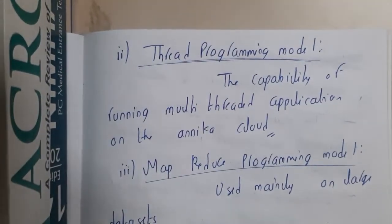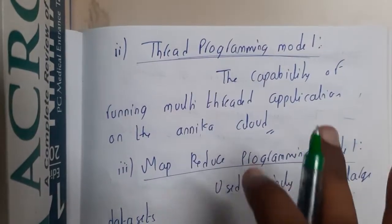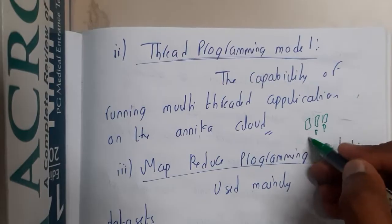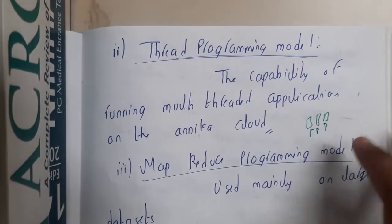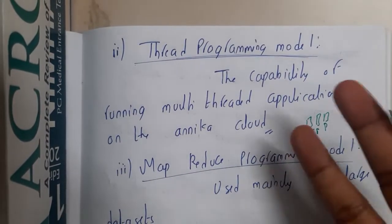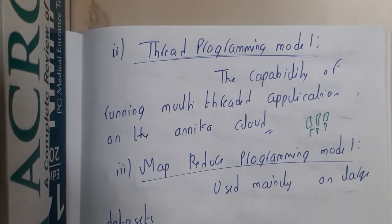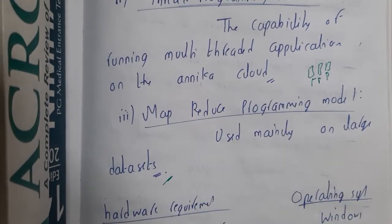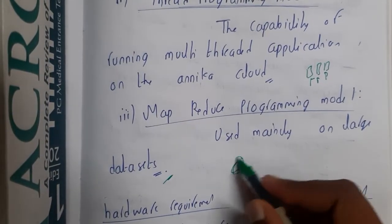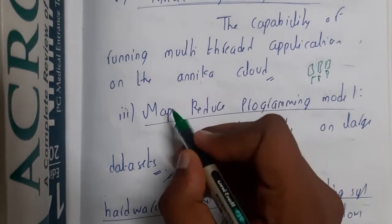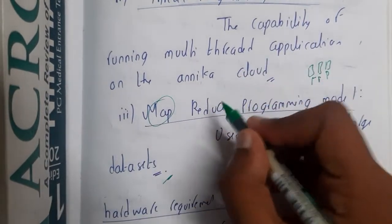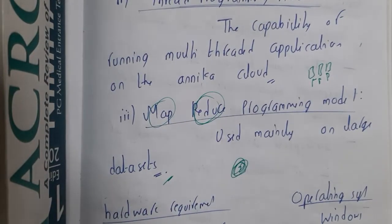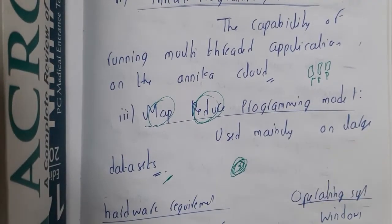If you divide things into threads, that comes under the Thread Programming Model — dividing the whole concept into multiple small threads. A thread is a lightweight process. You can even run multi-threading, running multiple threads at the same moment in time. Similarly, MapReduce — we already discussed this in the second unit in detail. Mapping is one step and reducing is another step. Using these two steps you can work on any kind of large dataset, which is a major advantage of the MapReduce programming model.